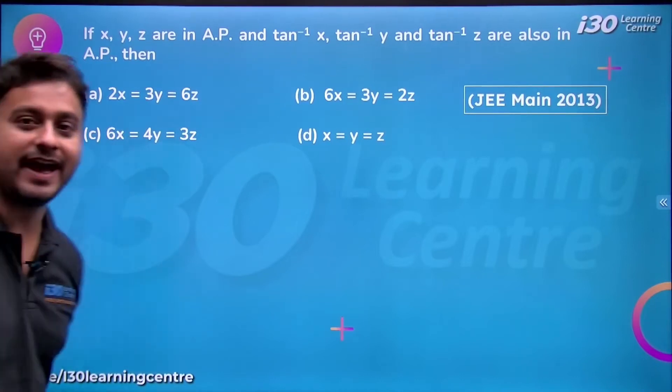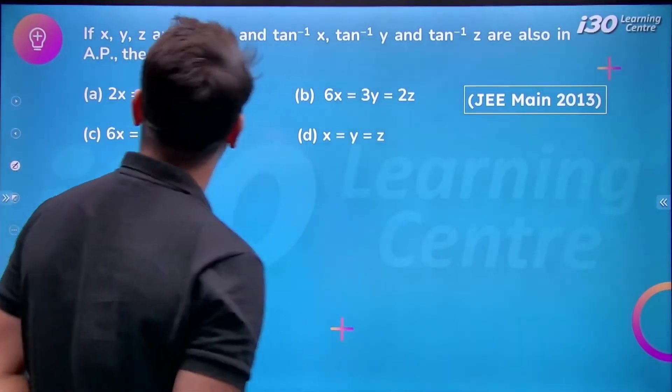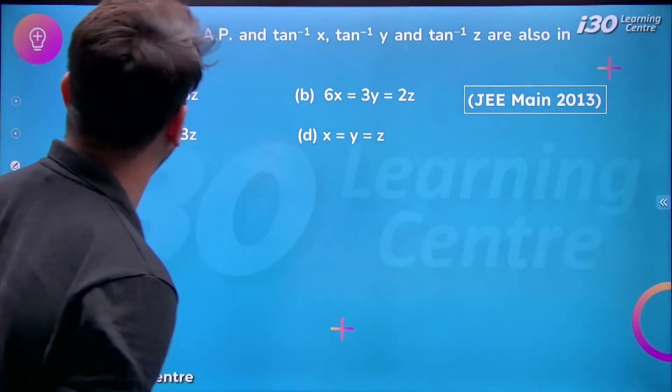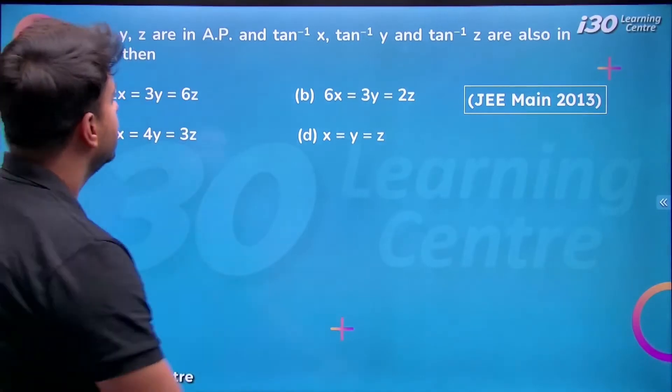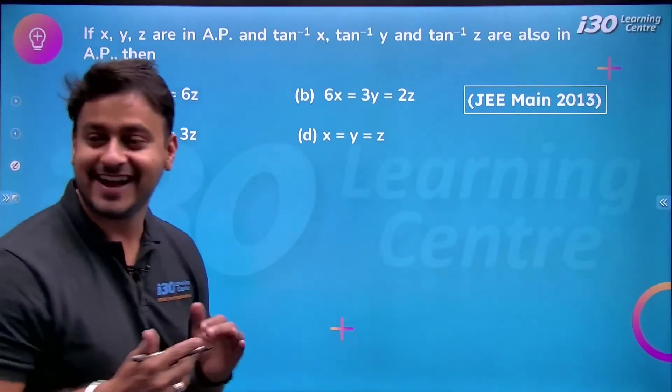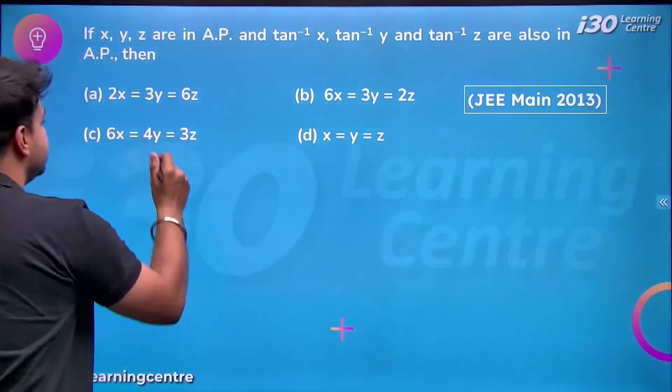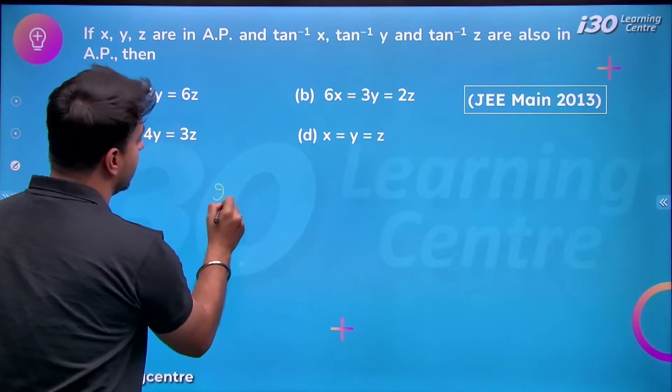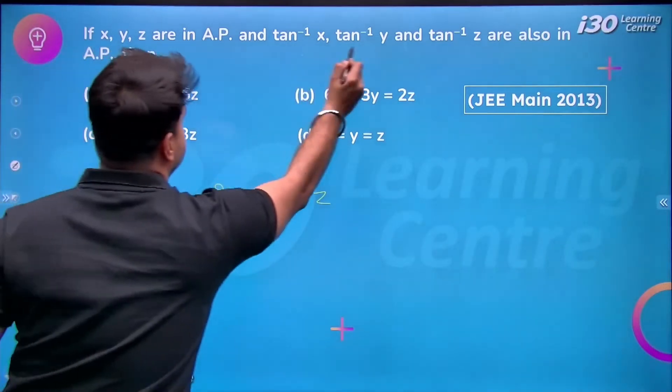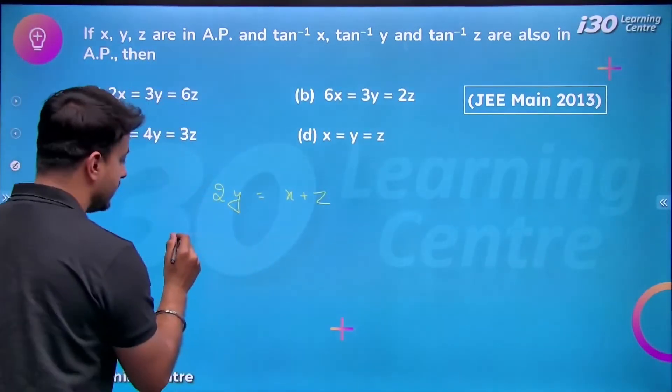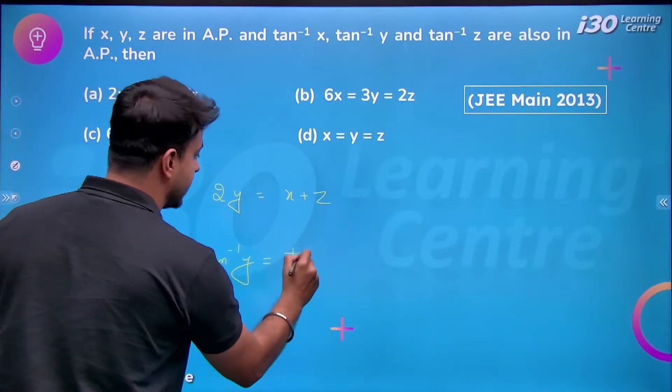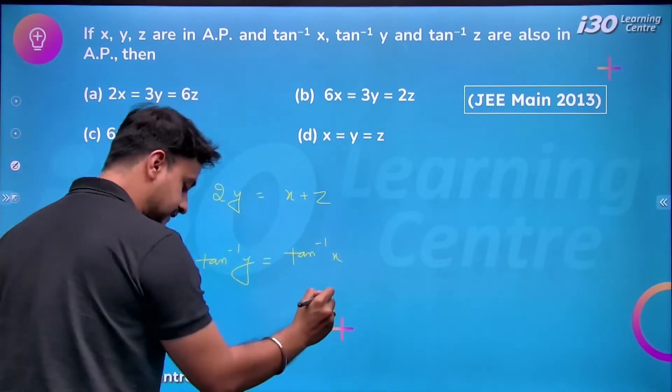If x, y, z are in A.P. and tan⁻¹x, tan⁻¹y, tan⁻¹z are also in A.P., then what relation will form between x, y, z? If x, y, z are in A.P., we can simply say 2y = x + z. And if tan⁻¹x, tan⁻¹y, tan⁻¹z are in A.P., we can say 2tan⁻¹y = tan⁻¹x + tan⁻¹z.